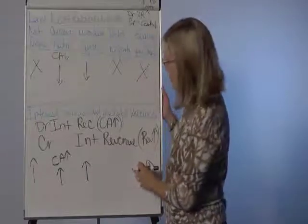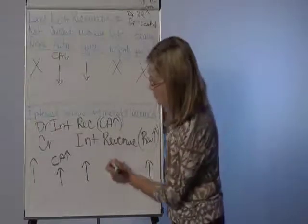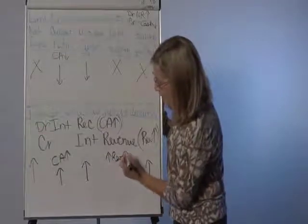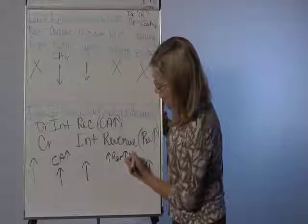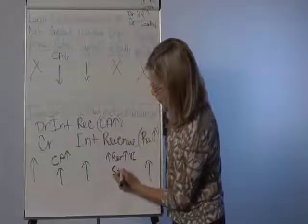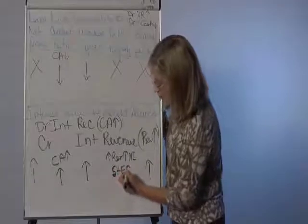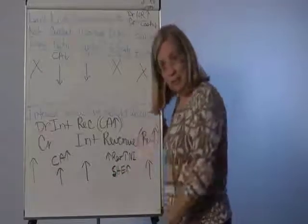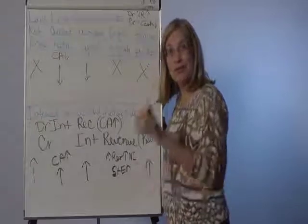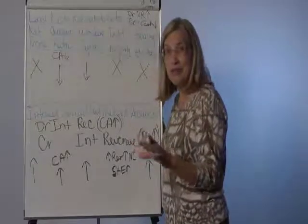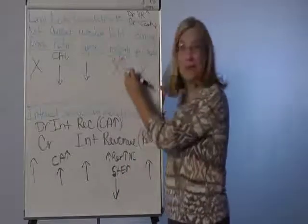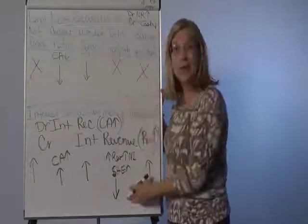When we look at debt to equity though, remember our revenue's going up, which means our net income's going up, which results in stockholders' equity increasing. So the denominator, the lower number, is getting larger. A larger number into total liabilities, which remains unchanged, means that the debt to equity or debt to worth ratio is going down.